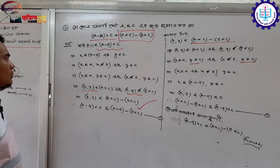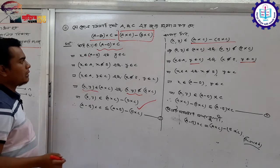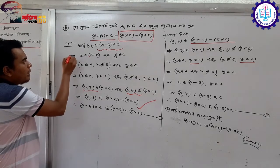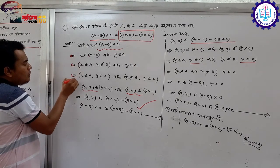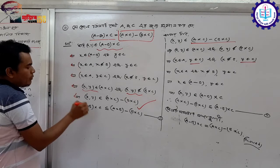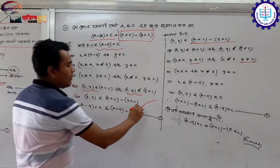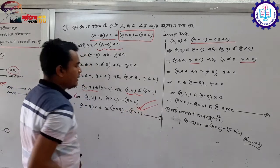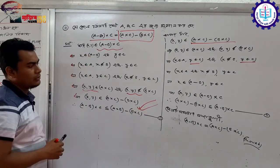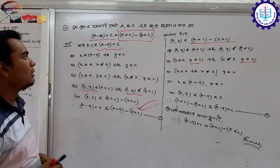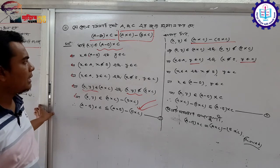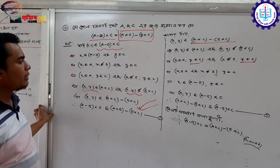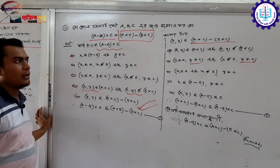If everything is balanced and equal, then this proof is complete and can be written from here onwards. The next answer needs to be given.